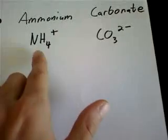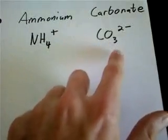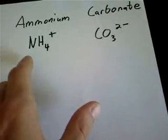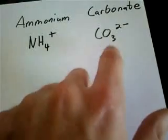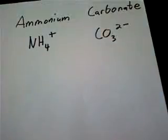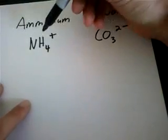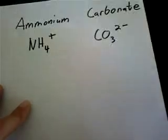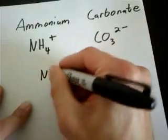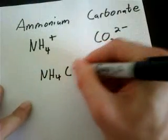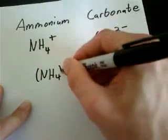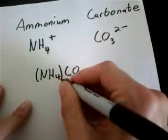So this time, if we double our cation and leave the anion alone, then we'll have the sum of the charges of the cations canceling out with the sum of the charges on the anions. So we're going to double NH4, and we're going to leave CO3 2- alone. So if we have NH4, CO3, and then what I'm going to do is I'm going to put the NH4 in parentheses and give it a subscript 2.